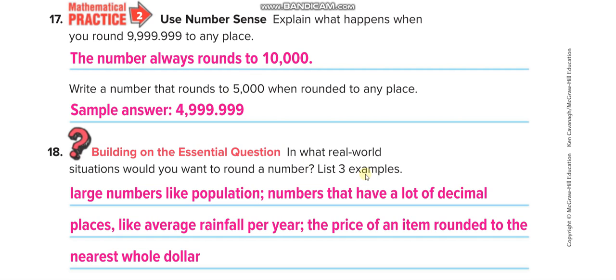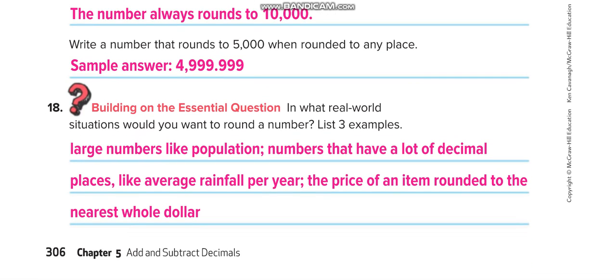In what real-world situations would you want to round a number? List three examples: large numbers like population, numbers with many decimal places like average rainfall per year, and the price of an item rounded to the nearest whole dollar — excluding the cents. I hope you understand the lesson. If you do, don't forget to like this video and subscribe to my channel, Learn Math with Mr. Saad. Thank you so much, guys — have a nice day!